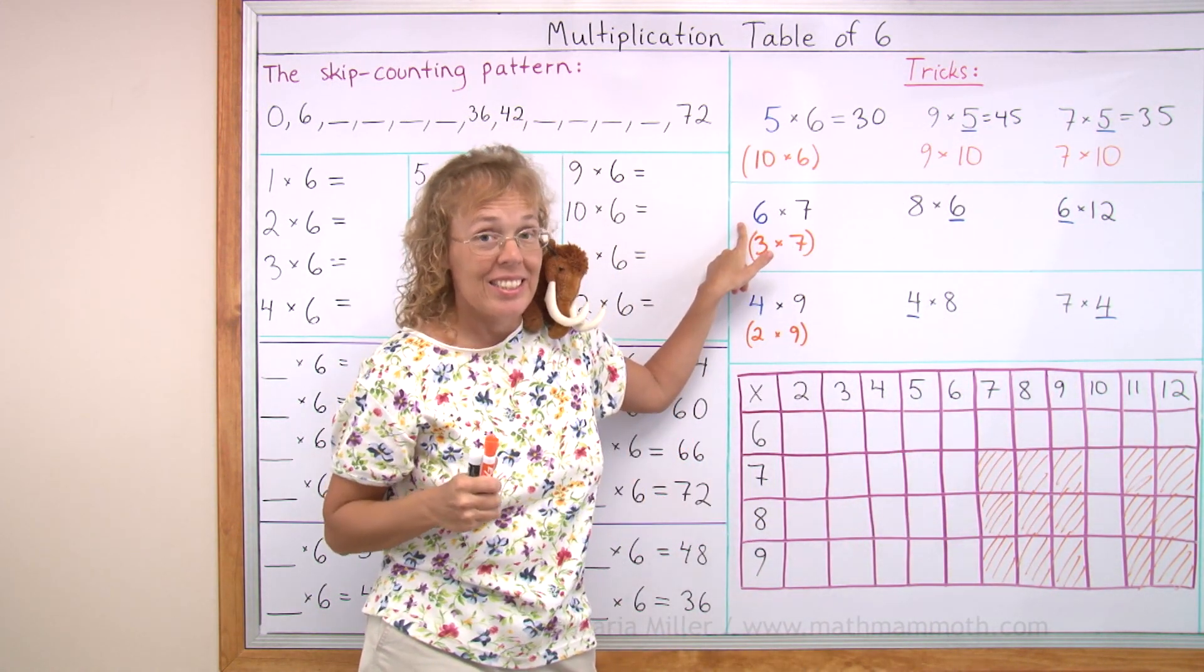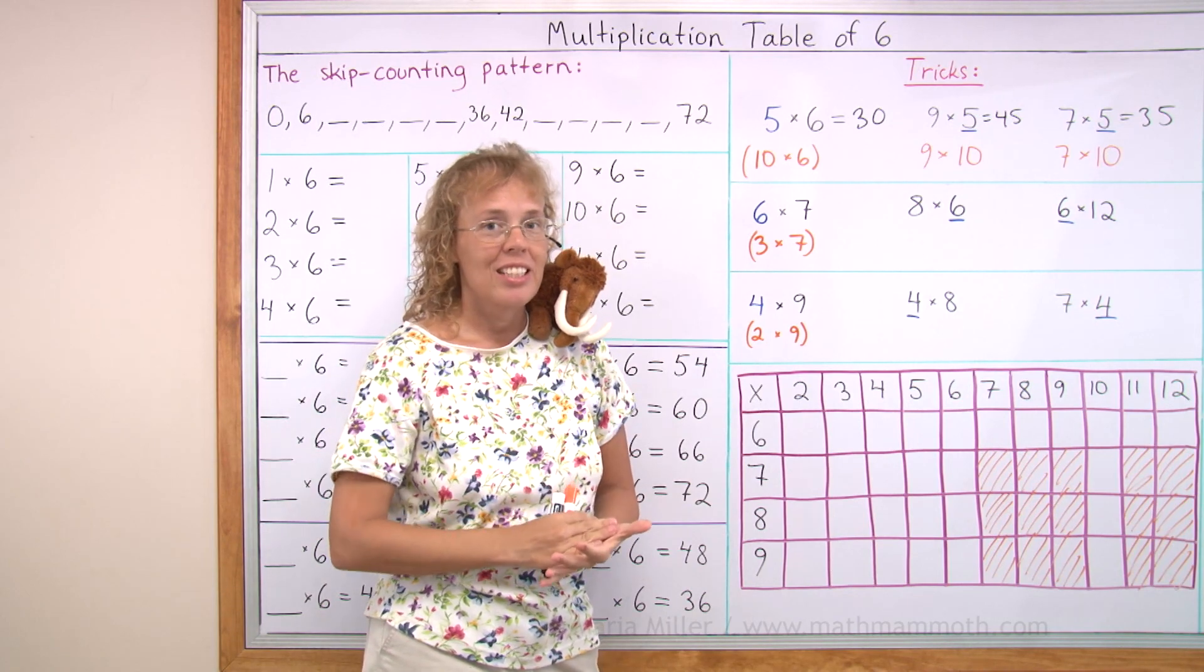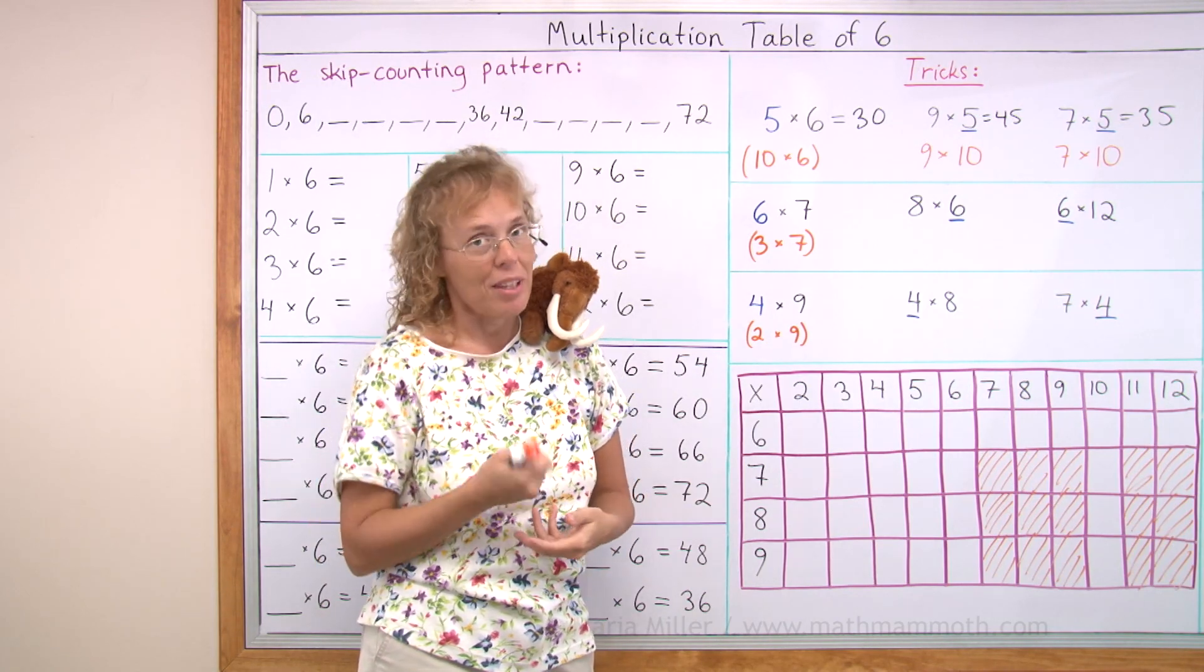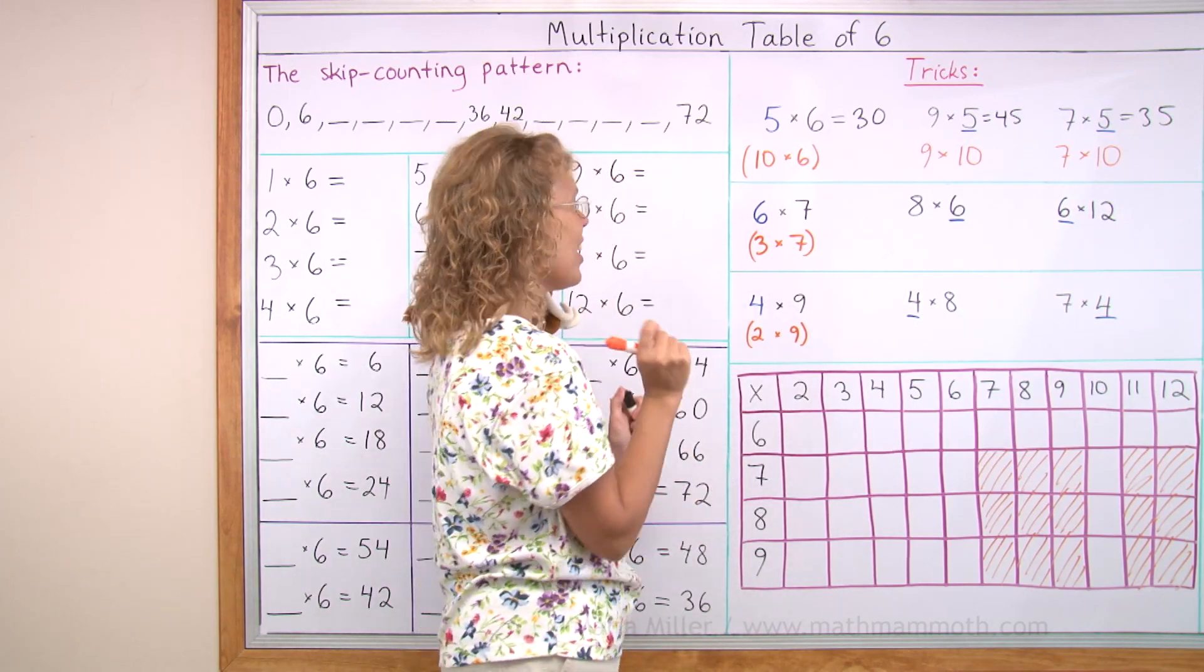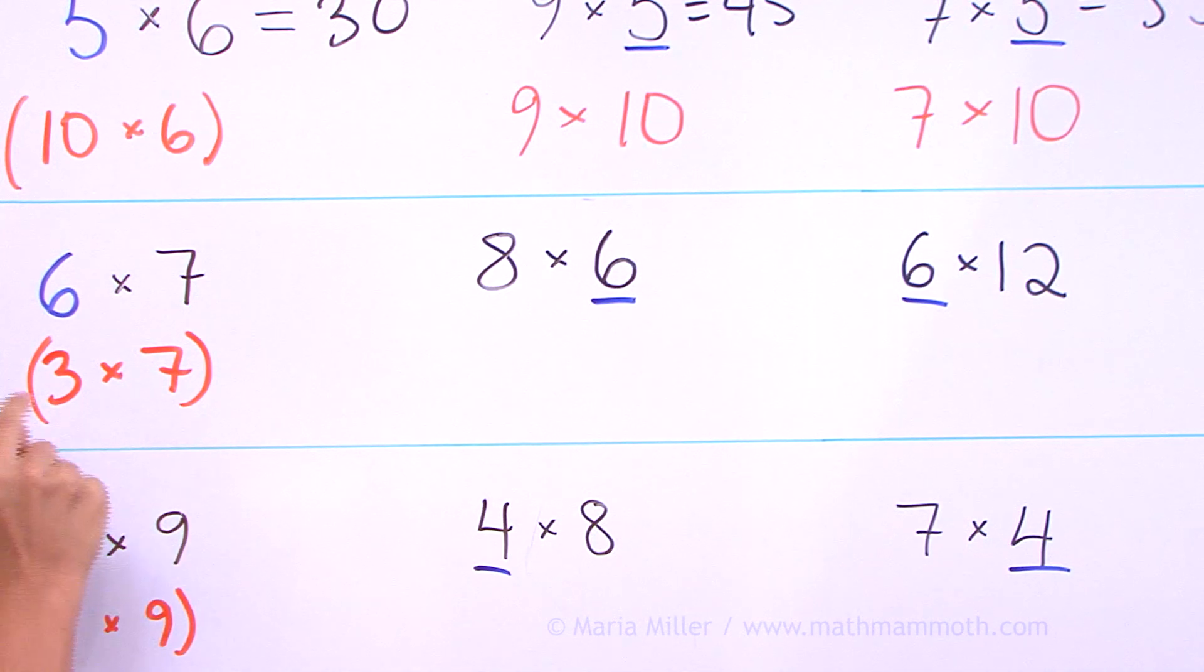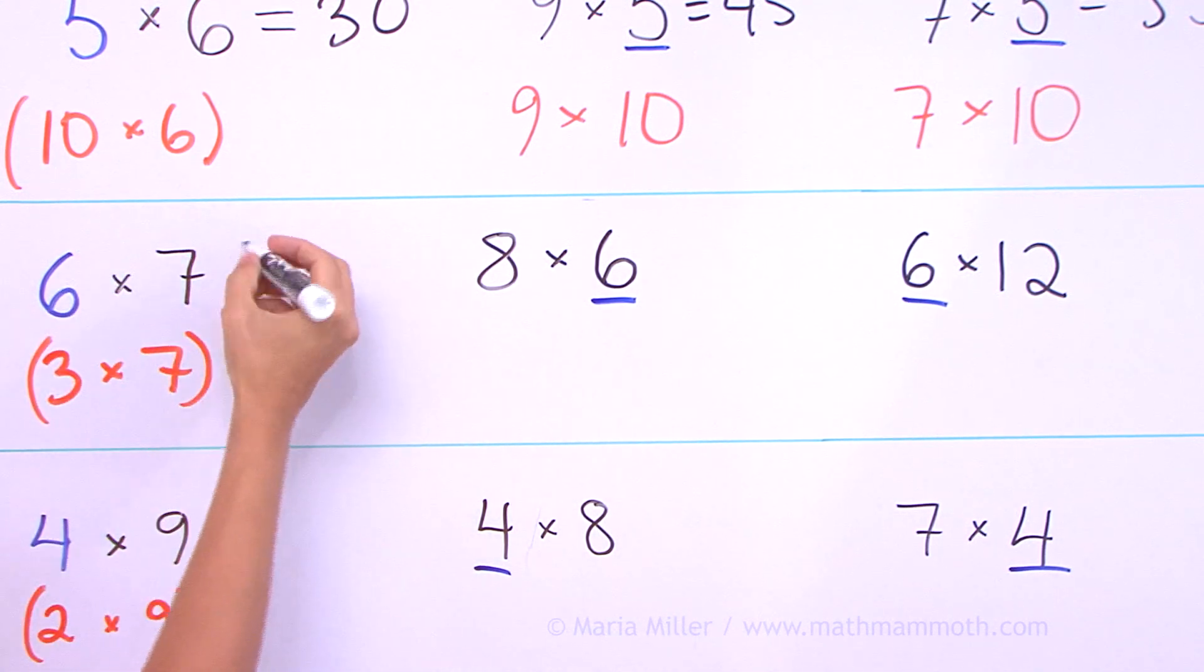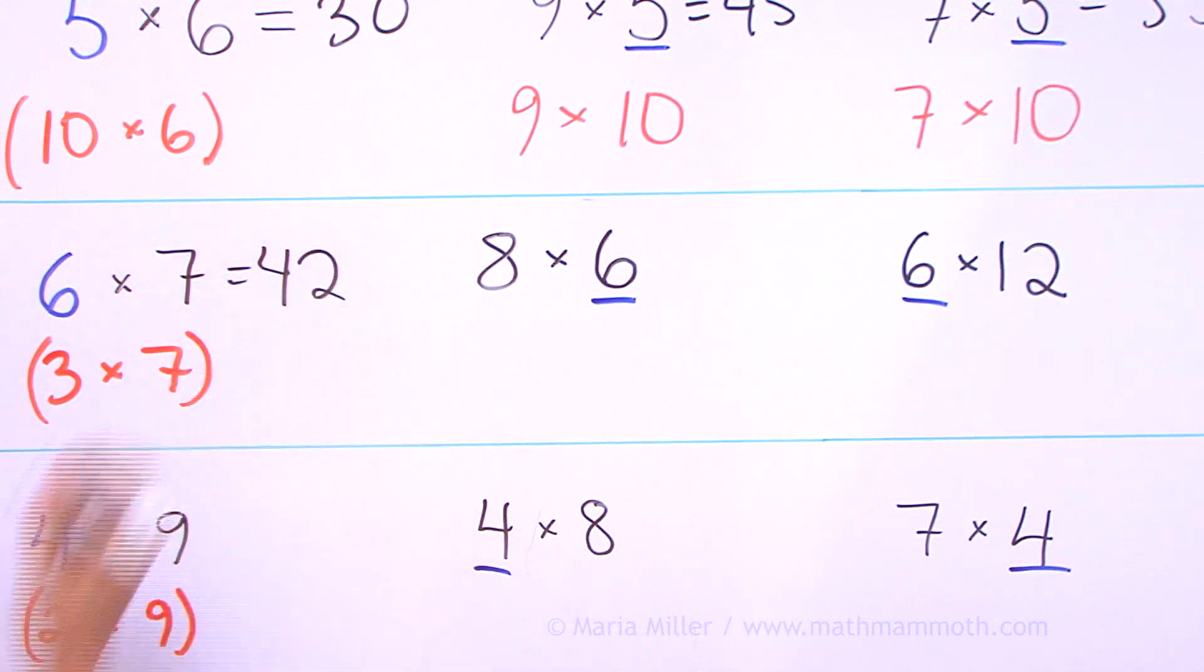For table of 6, the helping idea is to look at the table of 3 and double that. So 6 times 7, we just studied that. If you don't remember it, you can think of 3 times 7. Hopefully you remember that. It's 21, and then double that. Double 21, 42.